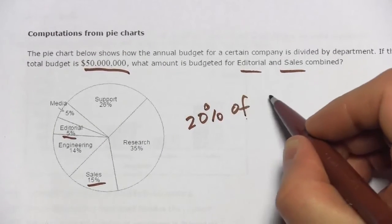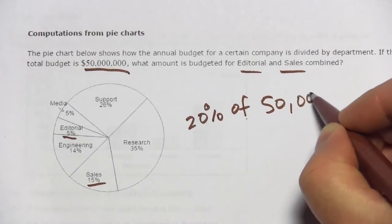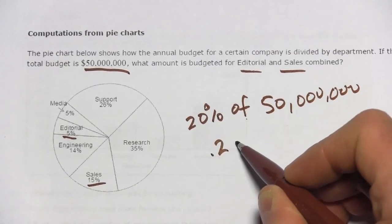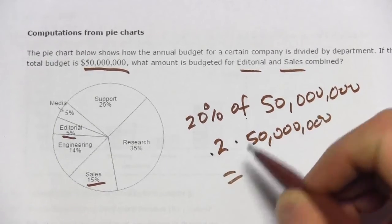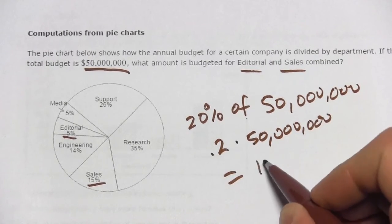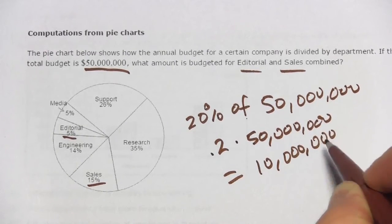We want 20% of 50 million. That is 0.2 times 50 million, and that, of course, is 10 million.